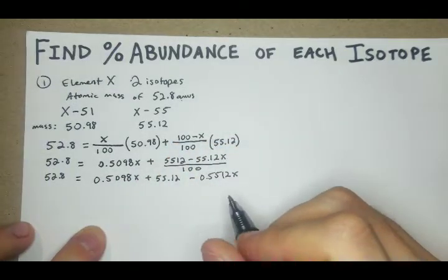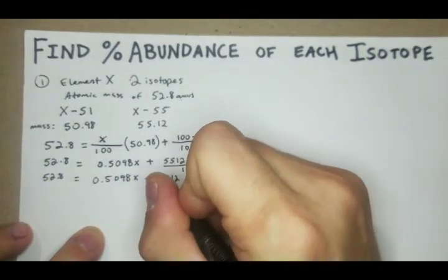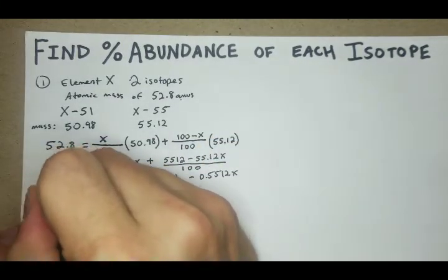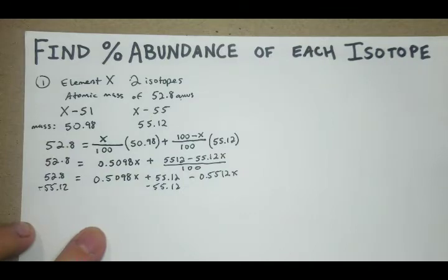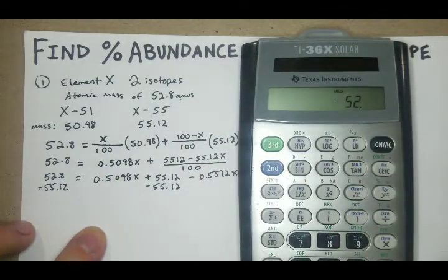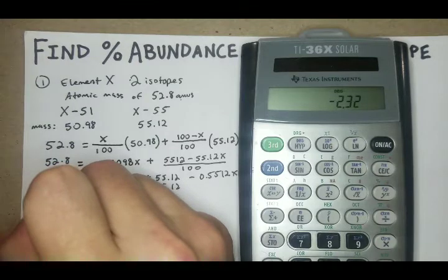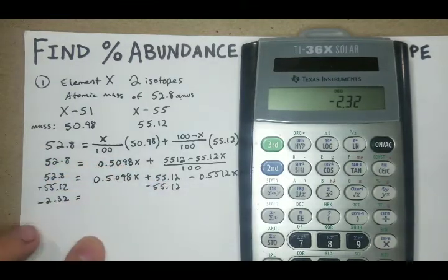We'll just go minus 55.12 minus 55.12. So here we have 52.8 minus 55.12. We're going to get a negative 2.32, which is totally fine.